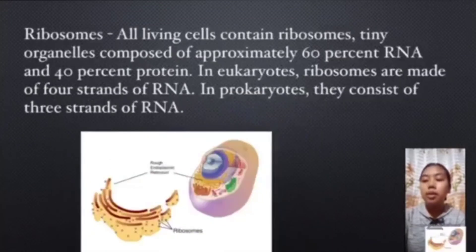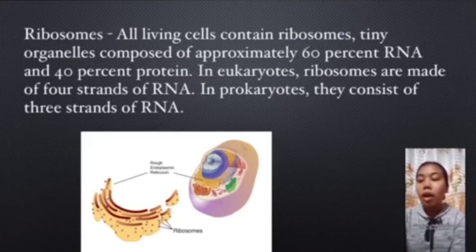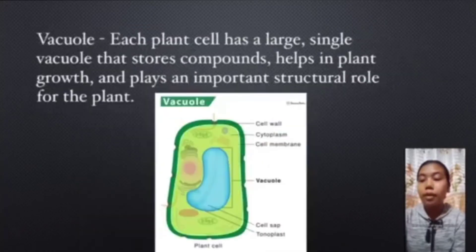Ribosomes. All living cells contain ribosomes, tiny organelles composed of approximately 60% RNA and 40% protein. In eukaryotes, ribosomes are made of four strands of RNA. In prokaryotes, they consist of three strands of RNA.